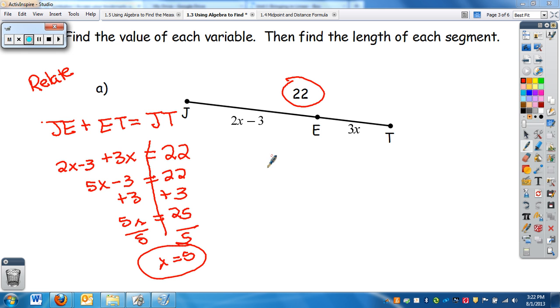So now we can use our value of X to figure out what each one equals. So JE, which equals 2X minus 3. Instead of X, we can substitute in 5 or replace it. So I have 2 times 5 minus 3. So JE equals 7.